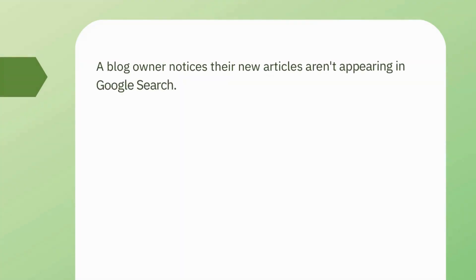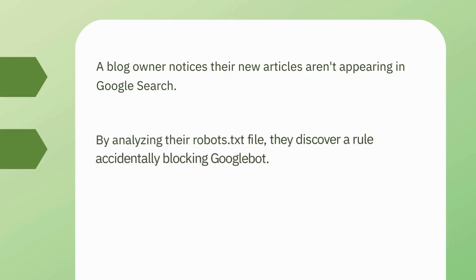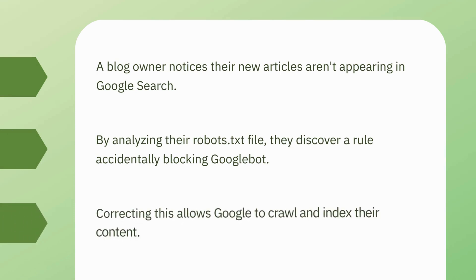A blog owner notices their new articles aren't appearing in Google Search. By analyzing their robots.txt file, they discover a rule accidentally blocking Googlebot. Correcting this allows Google to crawl and index their content.